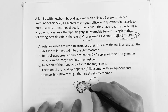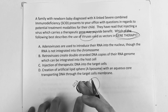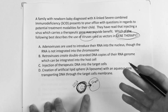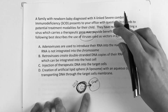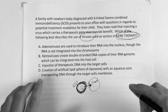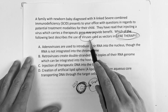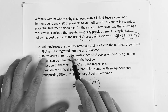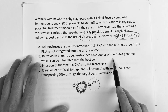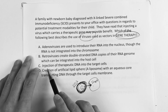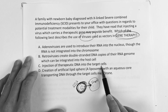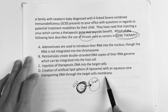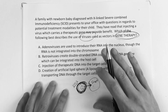They use a virus to encapsulate the gene — potentially modified — and introduce it into the target cell, whether that's a cancer cell or some other affected cell, like in X-linked SCID. The answer choices are: A) adenoviruses introduce their RNA into the nucleus, though the RNA is not integrated into the chromosome; B) retroviruses create double-stranded DNA copies of their RNA genome, which can be integrated into the host cell; C) injection of therapeutic DNA into target cells; or D) creation of an artificial liposome with an aqueous core to transmit DNA through target cell membranes.